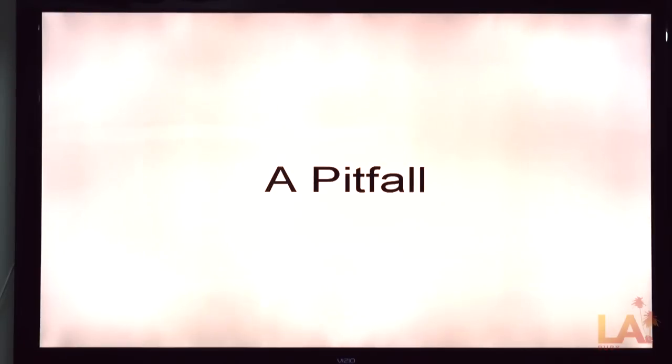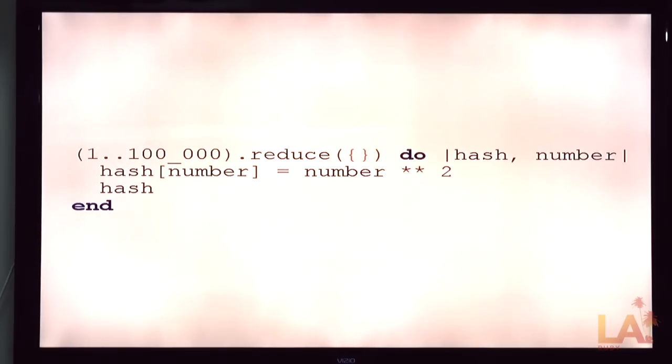Because reduce can lead you into a pitfall. There's actually a semi-famous example of this and so like to the point of there can be performance issues. It is useful to know some of them. This is not because it's badly implemented. It's a slightly different thing. It can be tempting to do something like that. You need to build up a hash of the squares of the numbers from one to a hundred thousand or something like that.